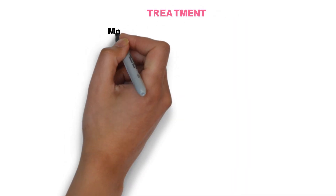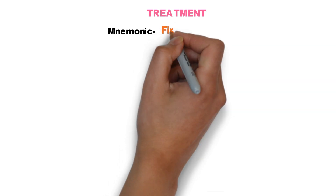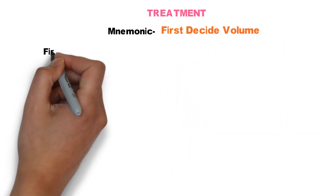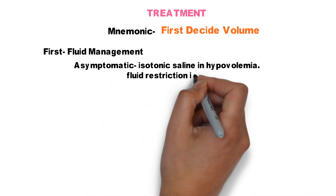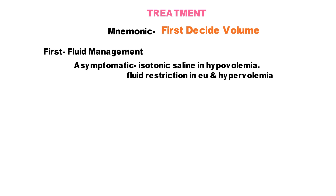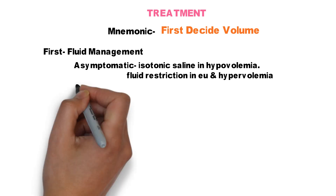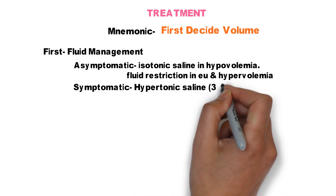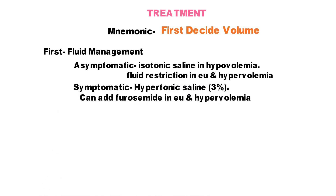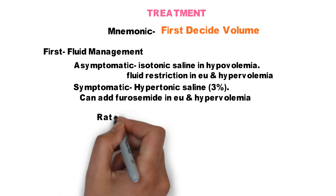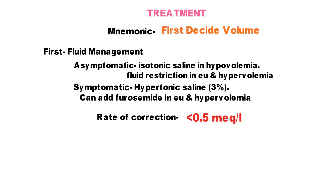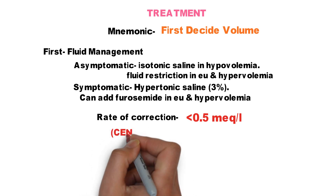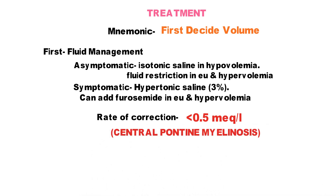For treatment, the mnemonic mirrors evaluation: First Decide Volume. First — fluid management is the most important step. In asymptomatic cases, use isotonic saline for hypovolemia, and fluid restriction for euvolemic and hypervolemic states. In symptomatic cases, use 3% hypertonic saline; furosemide can be added in euvolemia and hypervolemia. The rate of correction should be less than 0.5 mEq/L per hour — rapid correction can cause central pontine myelinolysis.